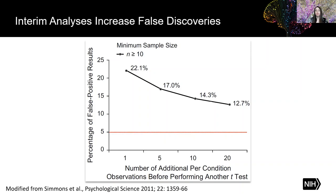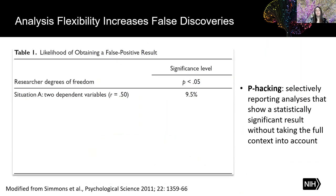Increasing sample size in search of a more robust result and thereby performing multiple significance tests can actually introduce more error into the experiment. This is why you should choose your sample size in advance and stick with it, or at the very least report it if you do not. A similar issue is choosing which analyses you'll use to interpret your data — choosing the analysis in advance is just as important as choosing the right type of analysis.